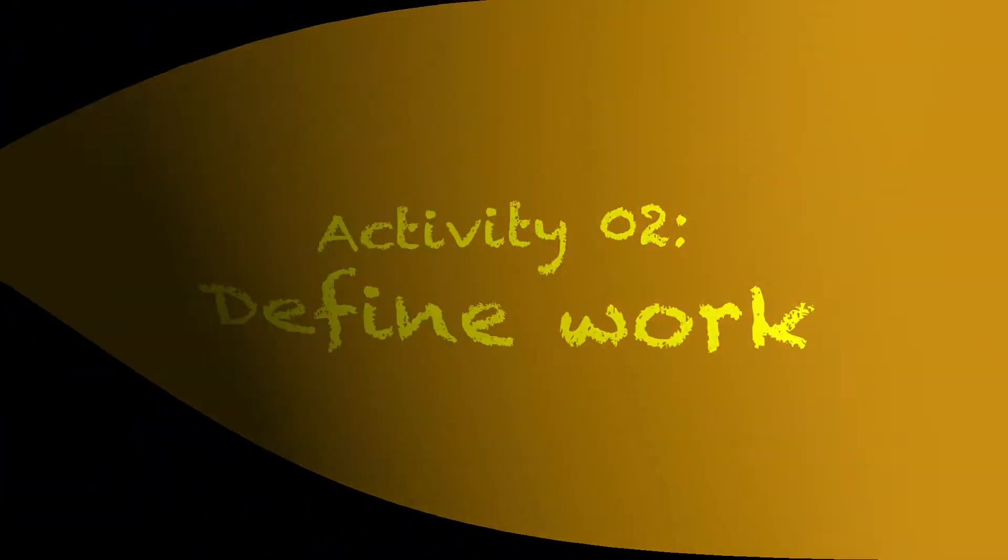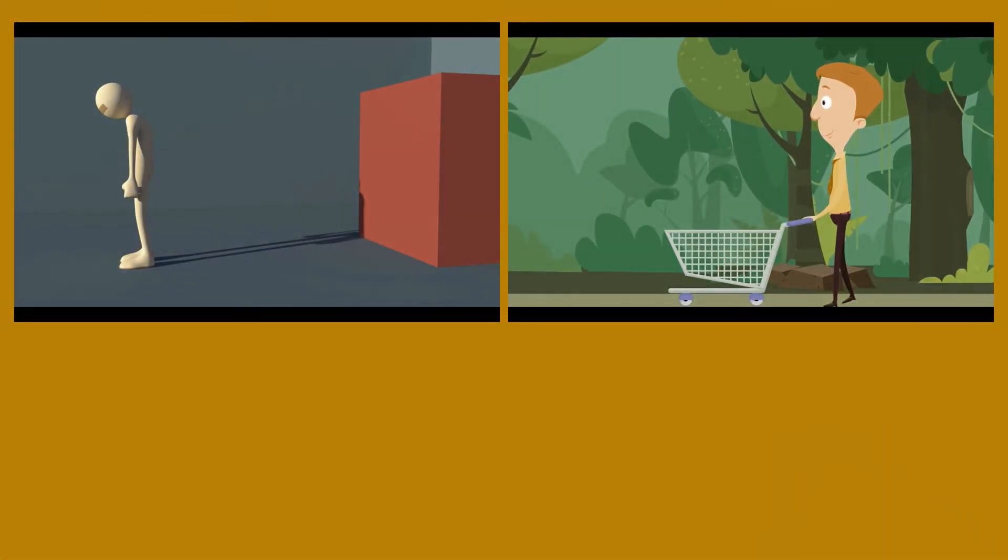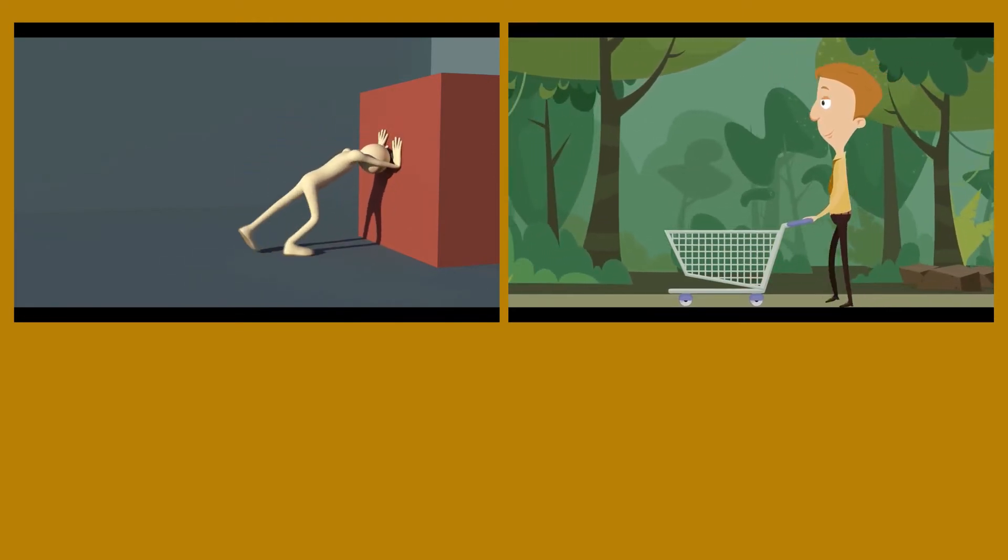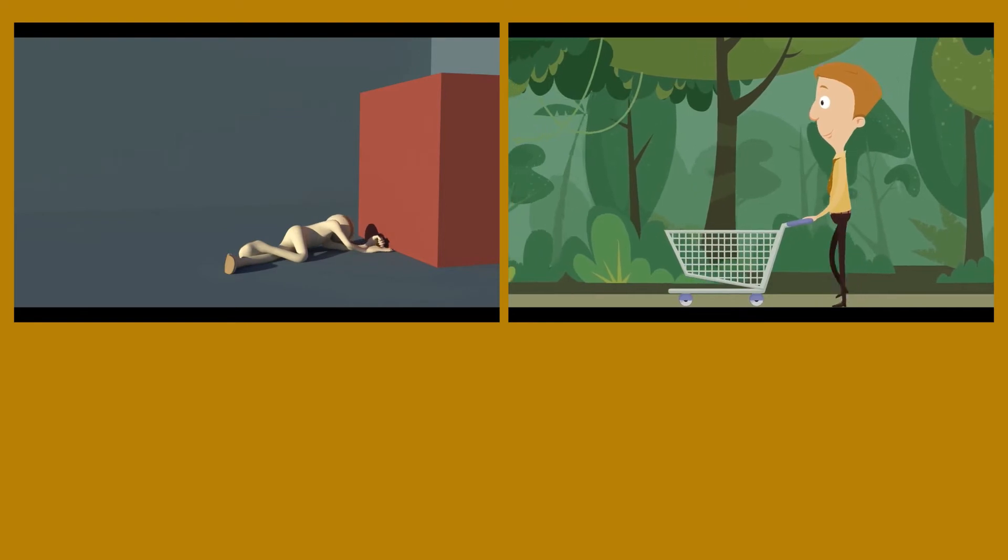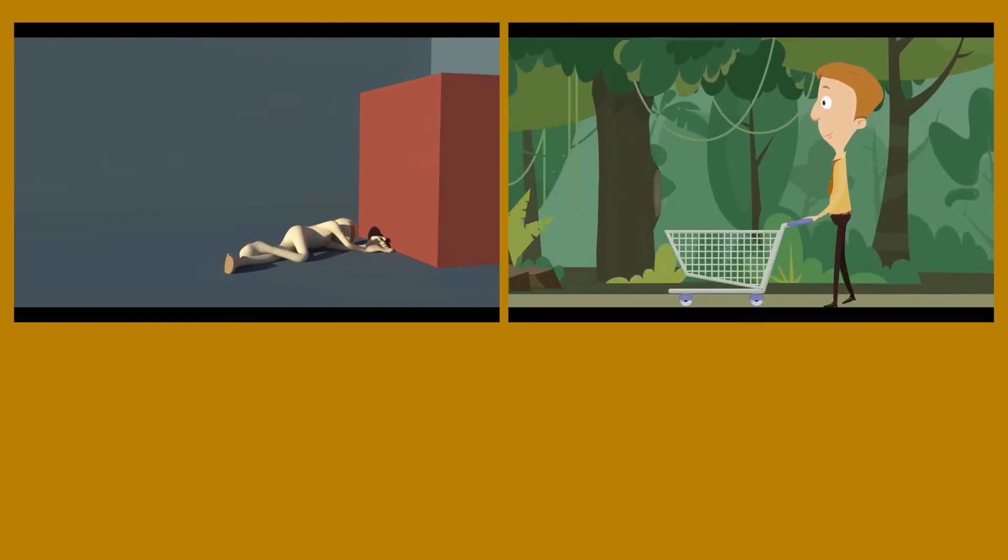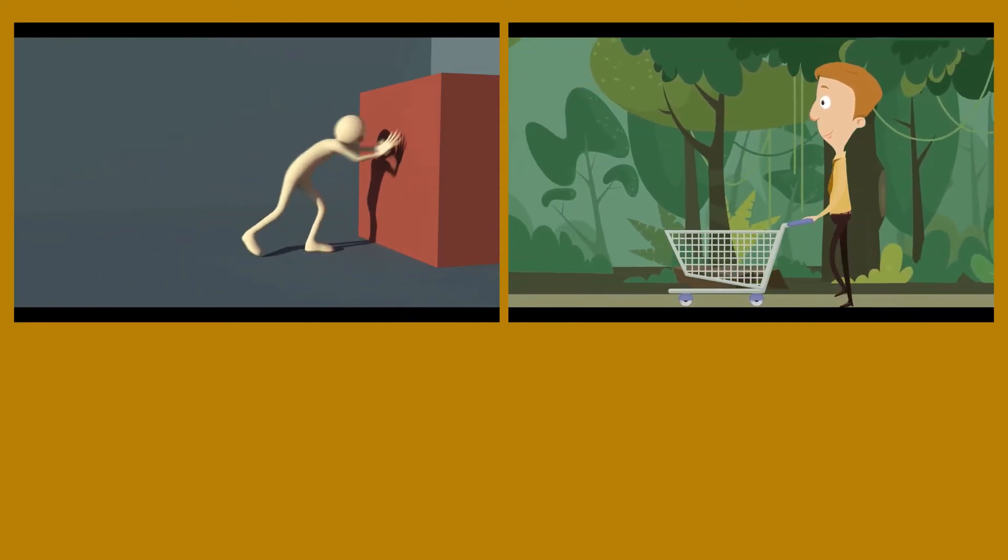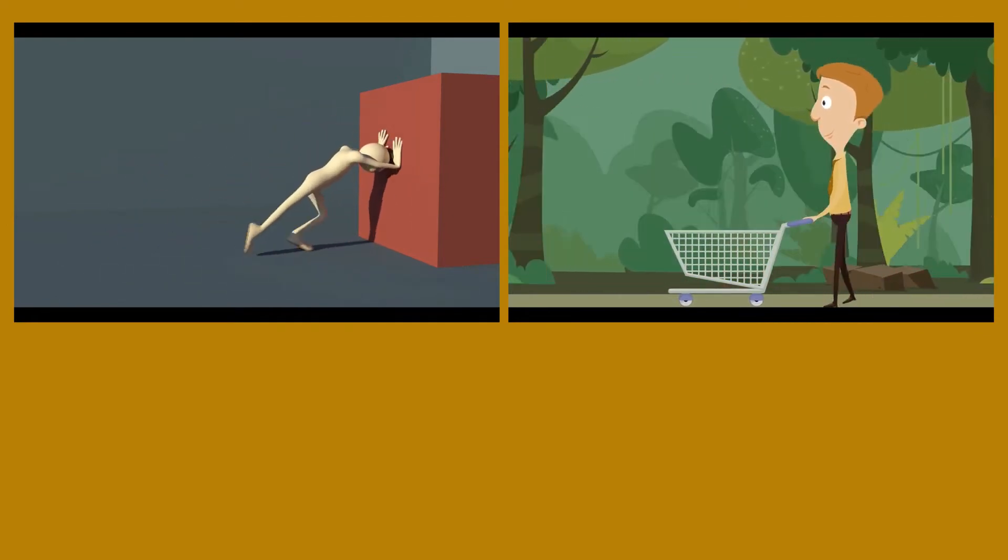Activity 2: Define work. On your screen, there are two persons. The first is trying to move the wall and the second is trying to move the trolley. The boss decided to give money to the person who is doing the work. Help the boss to make the right decision by answering the two questions.